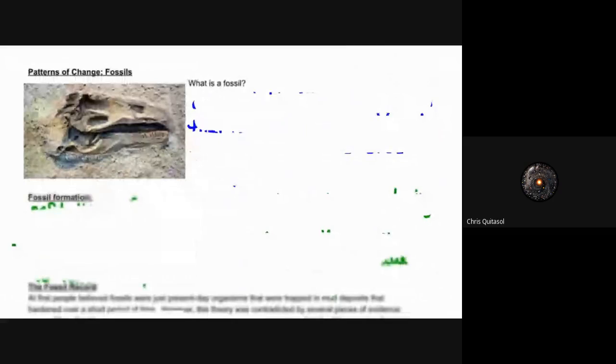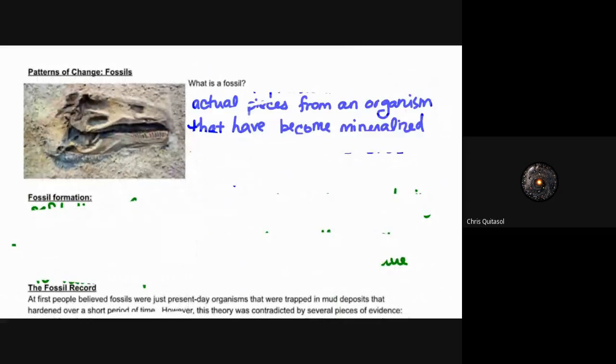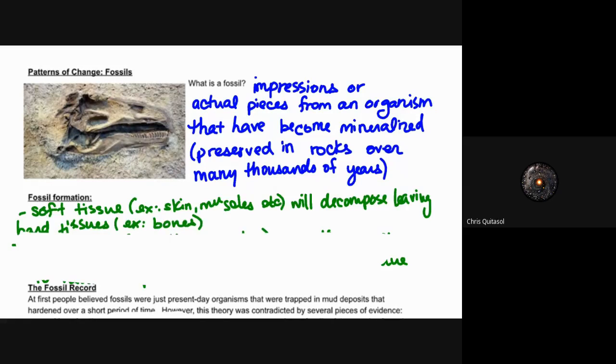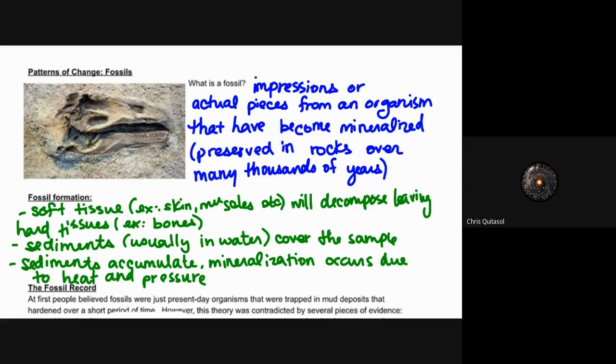When we look at fossils and these patterns of change, a fossil is an impression or actual pieces from the organism that have become mineralized as a result of pressure in rocks or underneath rocks and dirt over thousands of years. Fossil formation usually revolves around soft tissue like skin and muscles being decomposed, leaving those hard tissues like bones to be fossilized. These sediments are usually in water and they cover that sample, and as a result of that accumulation, mineralizations occur due to the heat and pressure, forming those fossilized bones.